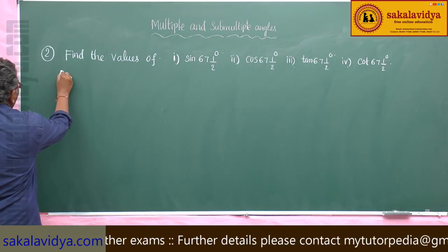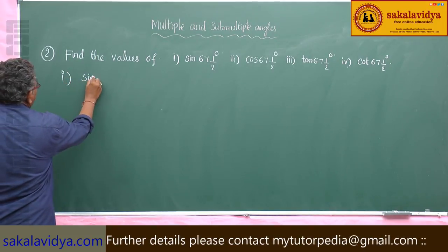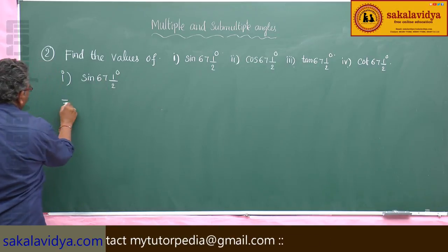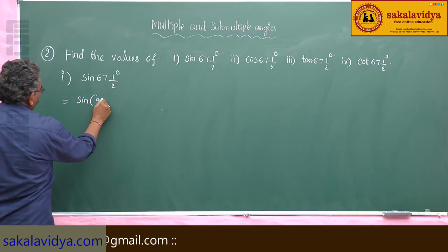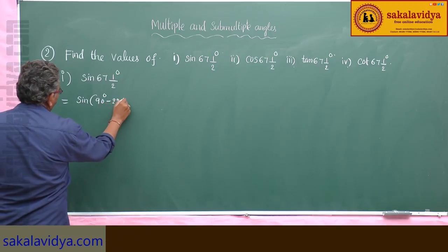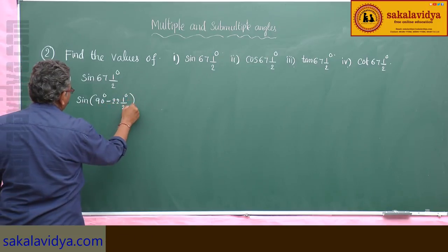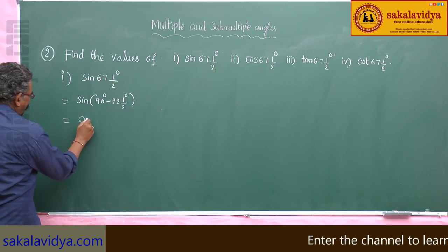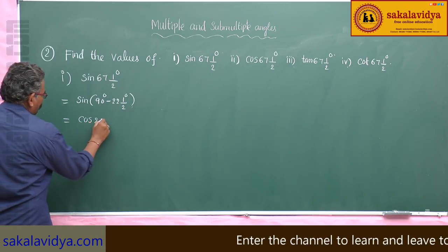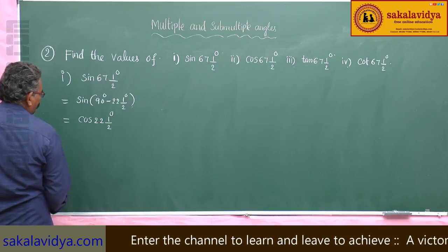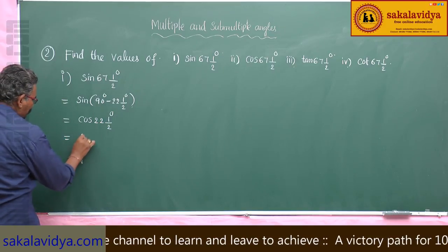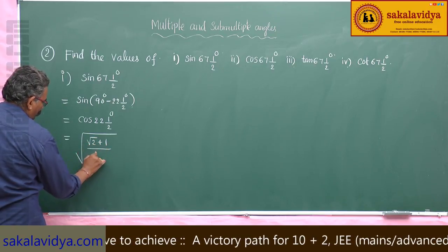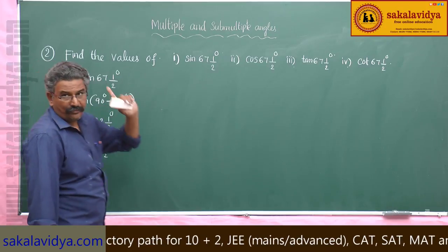First problem: sin 67 and a half degrees. This can be written as sin(90 degrees minus 22 and a half degrees). Since sin(90 minus θ) = cos θ, this equals cos 22 and a half degrees, which is root over (√2 + 1) by 2√2.